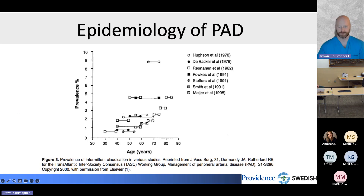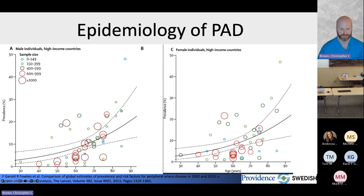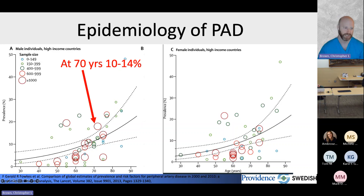The prevalence of peripheral vascular disease is actually quite high and significantly increases as patients age. An older slide from 1978 to 1998 shows prevalence of six or seven percent by ages 70 to 80. A more contemporary look from 2000 to 2010 shows that same trend holds, though it has almost doubled. Importantly, it doesn't discriminate by gender — about 10 to 14 percent in men and 9 to 12 percent in women — although there is a disparity in care, with more men treated despite nearly equal incidence.